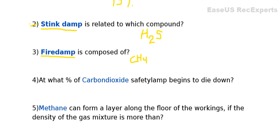The next question: at what percentage of carbon dioxide does a safety lamp begin to die down? The correct answer is 3 to 4% of carbon dioxide — at 3 to 4% CO2, our safety lamp begins to die down.